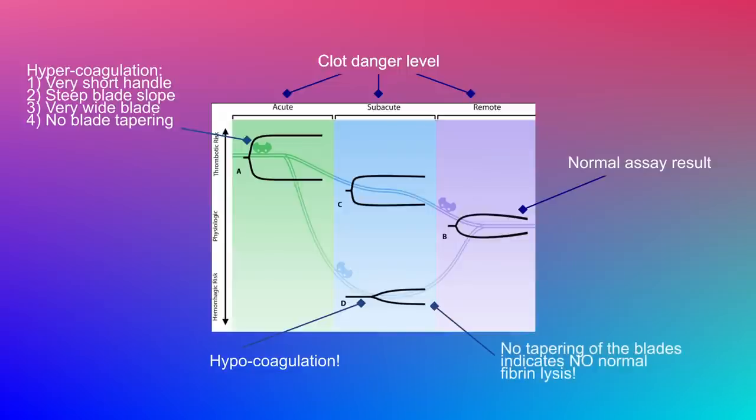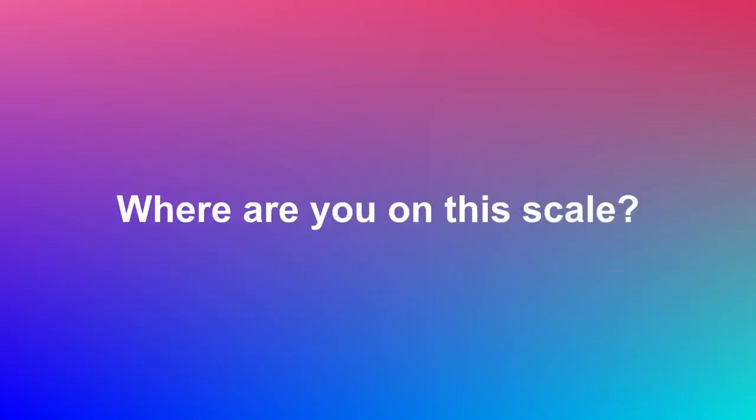This clearly shows the benefit of using this type of test to determine where someone is in their coagulation state. The normal physiological state would look in between those two extremes. That's why this could be a very good assay for doctors to use to determine what state of coagulation an individual is in — and it may potentially be the only type of assay currently available to measure this.